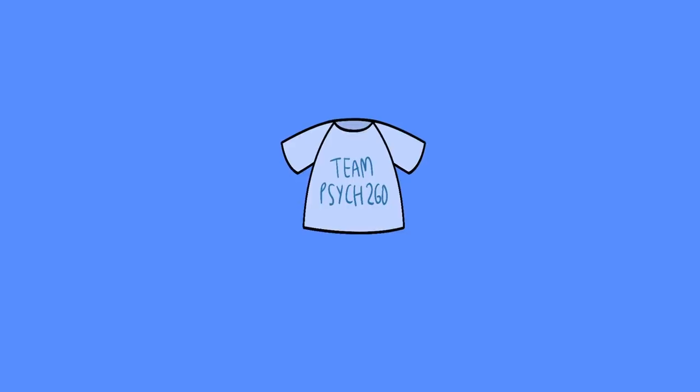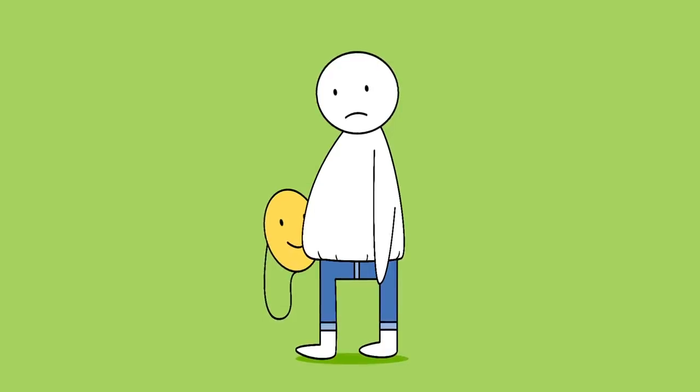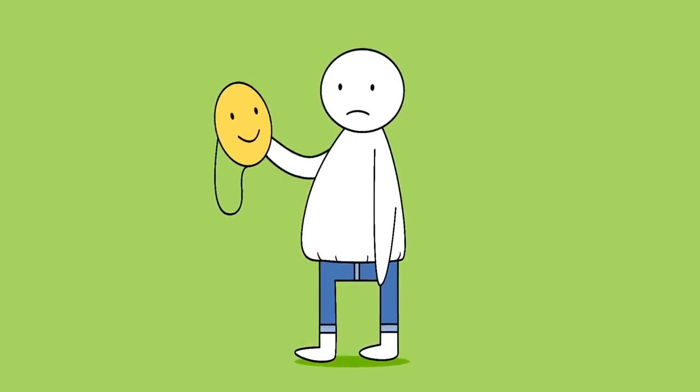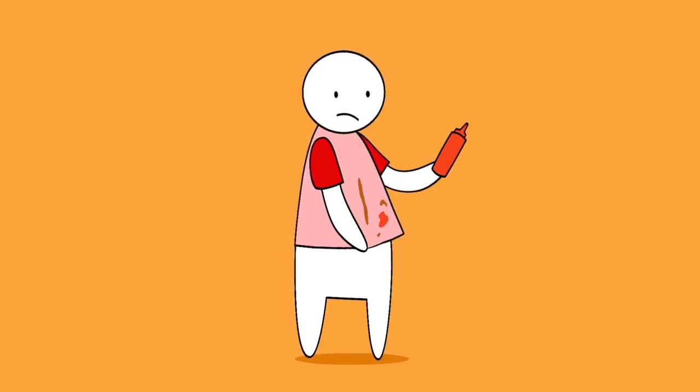Clothes. Clothes represent how we want the world to perceive us. Trying on new clothes means you're going through some life changes. Wearing clothes that don't fit you may suggest that you're putting on an act for others, while wearing clothes with stains or tears means that you feel damaged.